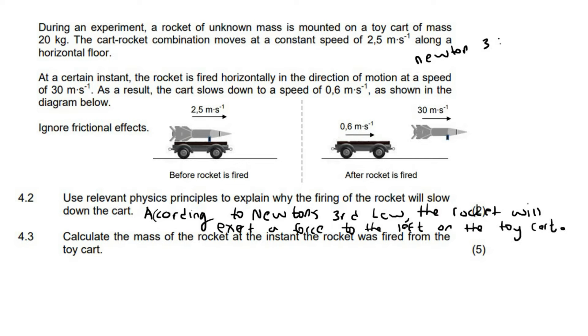Okay. Then this question says, calculate the mass of the rocket at the instant that the rocket was fired. Okay. So this is definitely going to be that formula that says that the sum of all of the momentum initially is the sum of all of the momentum final. Let's choose right as positive. And so we're just going to say M, mass of the cart, velocity of the cart initial, plus mass of the rocket, velocity of the rocket initial equals to mass of the cart, velocity of the cart final, plus mass of the rocket, velocity of the rocket final.